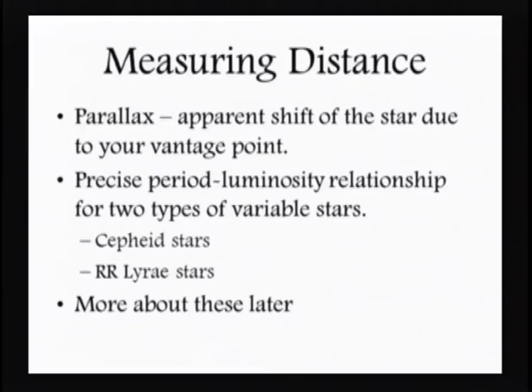That background shift gives us an indication of where that star is. Part of the problem ancient astronomers had when first trying to determine stellar distances was they couldn't measure any parallax, because the stars were so far away. We simply can't see that shift in background because they're so far away, so they just assumed stars weren't that far.